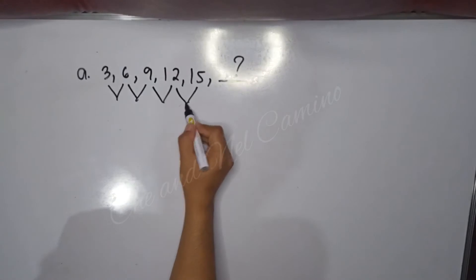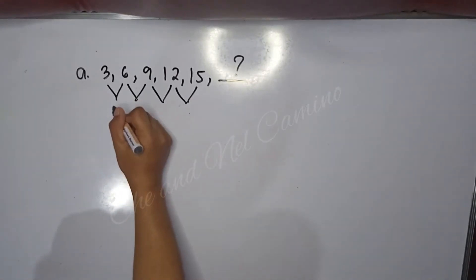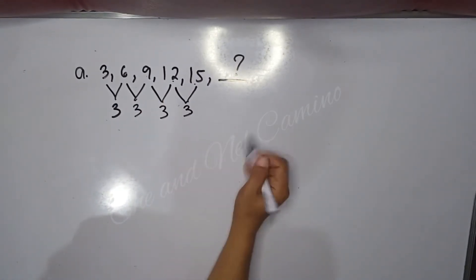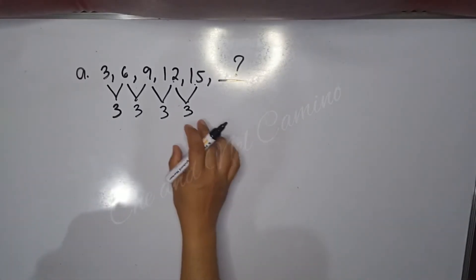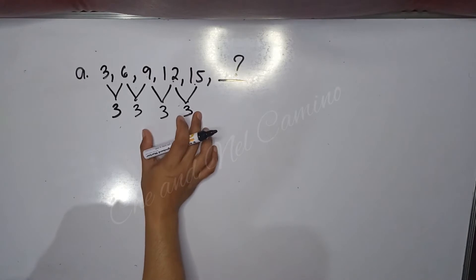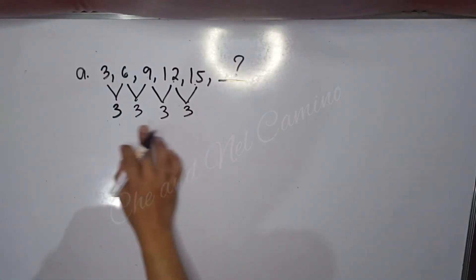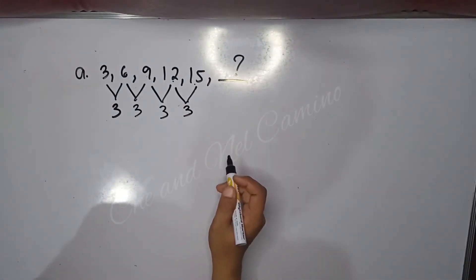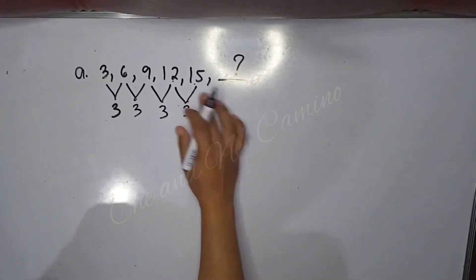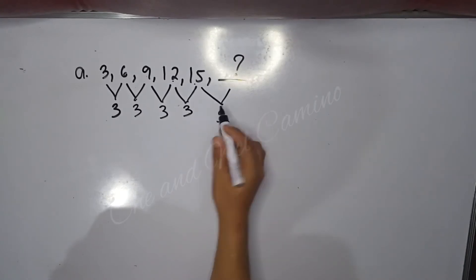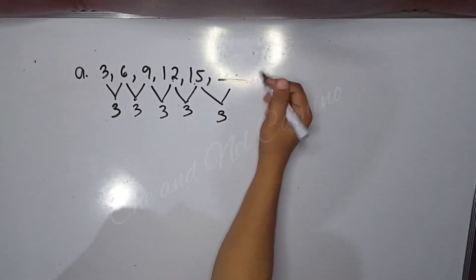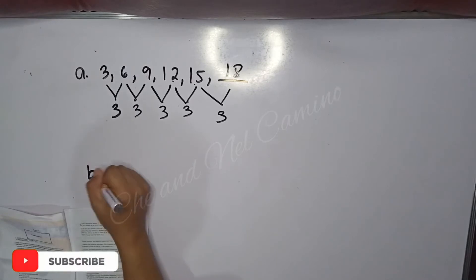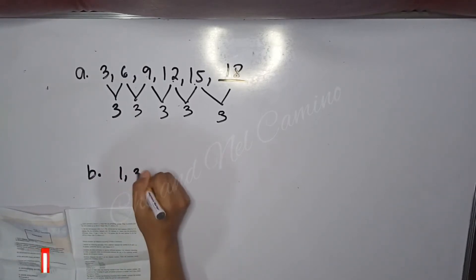The difference between 3 and 6 is 3, between 6 and 9 is 3, and so on — the common difference is 3. Since we have a common difference of 3, we add 3 to 15 to find the next number, which is 18. So the number in the blank should be 18. Now let's take letter B: 1, 3, 6, 10, 15, and a blank.